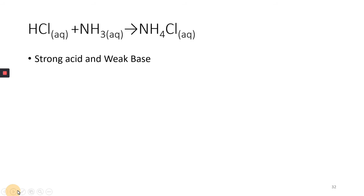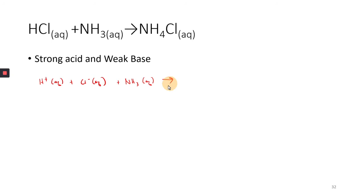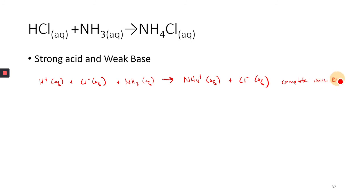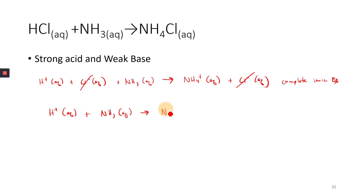Let's do this example together. We have hydrochloric acid — a strong acid — so since it's strong, I can separate it into ions. But I have ammonia, which is a weak base, so I have to leave it together. Looking at my products: ammonium chloride — all compounds with ammonium are soluble, so we can separate this into ions. Here is my complete ionic equation. Crossing out the spectator ions on both sides, I'm left with my net ionic equation.